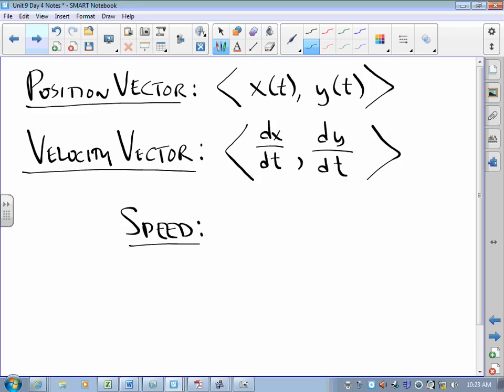Speed, hopefully this is all stuff we've driven home with ourselves. Speed is the magnitude of the velocity vector. In the same way that in one-dimensional motion, speed was the absolute value of velocity, in two-dimensional motion, speed is the absolute value of velocity.